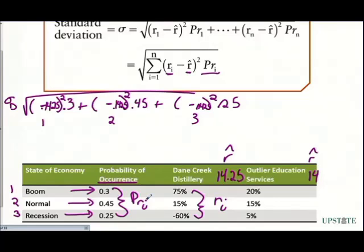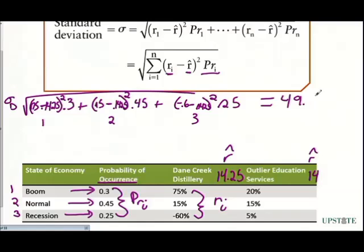We have all the numbers we need, so this gives us a standard deviation of 49.86%. This basically means there is a pretty wide dispersion — we have an expected return of 14.25%, but it could be 49% higher or 49% lower. So Dane Creek Distillery has a pretty wide dispersion.